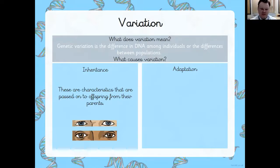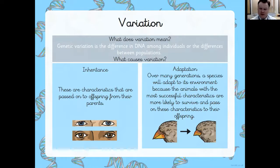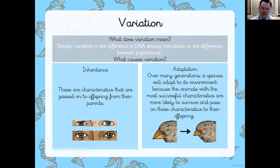Inheritance — these are characteristics that are passed on to offspring from their parents. Over many generations — offspring of offspring of offspring and so on — a species will adapt to its environment, because the animals with the most successful characteristics are more likely to survive and pass on those characteristics. You can see in this example a bird with a large pointed beak and then a smaller beak. These adaptations happen over thousands of years — it takes a lot of time.